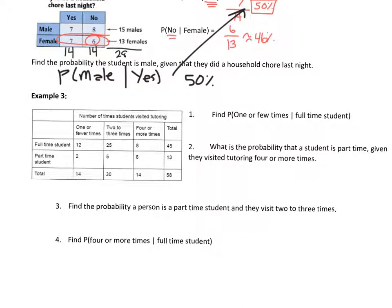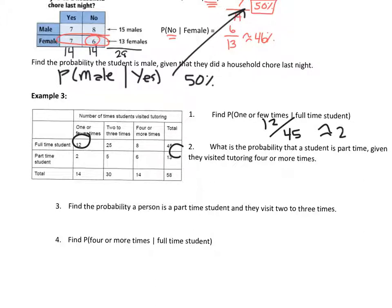Example three: a chart showing number of times students visited tutoring, broken down by full-time or part-time students, with totals already provided. Question one: find the probability a student went one or fewer times given they were a full-time student. The denominator is full-time students: 45. Of those 45, 12 went one or fewer times. So 12 divided by 45 is about 27%.